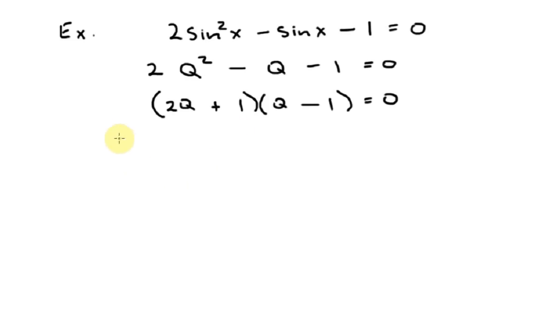Now, I'm going to do something else. I am going to re-substitute back in sin x for the Q. So this would actually be 2 times sin x plus 1. And then over here I would have sin x minus 1. And now I can actually take these two bracketed expressions and equate them to 0 and then solve for x. So here we go. We're on the home stretch here.